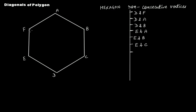Then from F: F and B, F and C. And finally A and C — since A and E, and A and D are already listed. So we count: one, two, three, four, five, six, seven, eight, and nine. We have nine pairs of non-consecutive vertices.